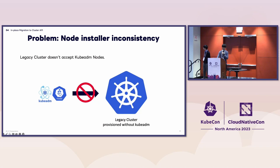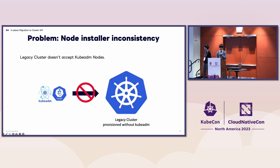The challenge is the inconsistency of the Kubernetes installer between the legacy system and Cluster API — specifically kubeadm. In the Cluster API context, we face an issue in node bootstrapping. With our Cluster API-based system, we use kubeadm, while with our legacy architecture, a Docker-based Kubernetes installer was used. At the beginning of this migration project, we tried to reproduce the approach taken by Mercedes-Benz — naively trying to run a kubeadm join command to add nodes to a legacy cluster — but it failed due to Kubernetes setup inconsistencies.